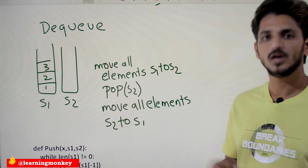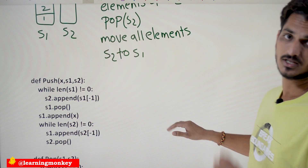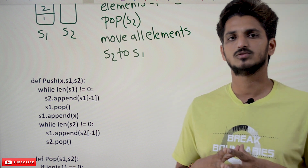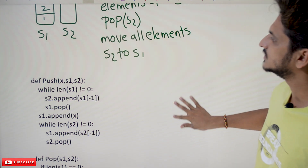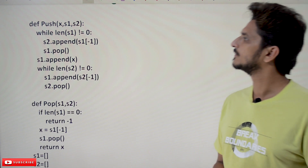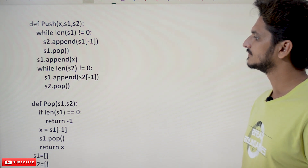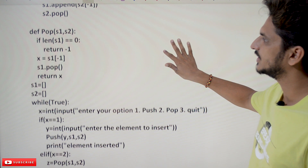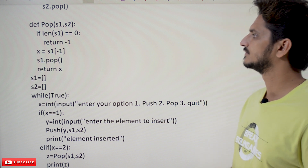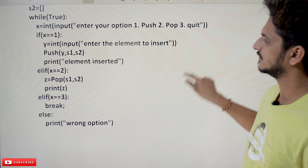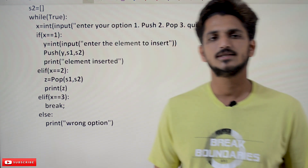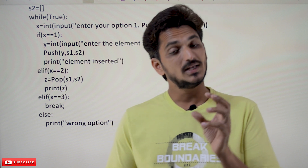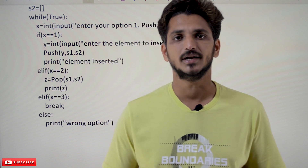Either way you can go with. The code provided below follows the first method. Our suggestion is to try solving it on your own after listening to the logic, then check the solution — try both the ways. This code is available on our website learningmonkey.in. Hope you understand this example. If you have any questions regarding the concept, please post your questions in the comment section below. Thanks for watching. If you haven't subscribed to our channel, please subscribe and press the bell icon for the latest updates. Thank you.